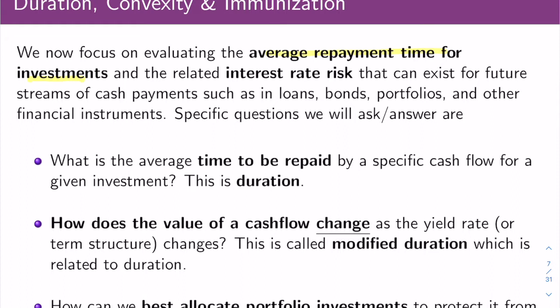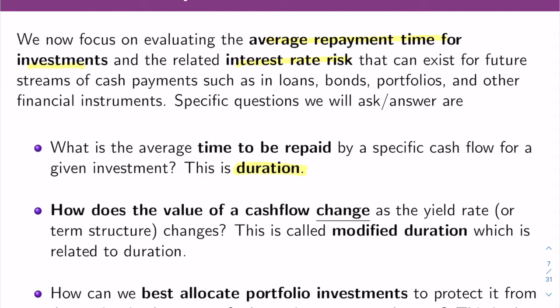Now we focus on evaluating the average repayment time for investments and the related notion of interest rate risk for future cash payments such as loans and bonds. This is called duration. There's Macaulay duration — the average time to be repaid — and modified duration, which measures how the present value of a cash flow changes as the yield rate changes. We'll also talk about convexity and immunization: how to allocate a portfolio to protect it from interest rate shifts.